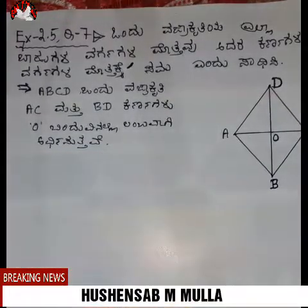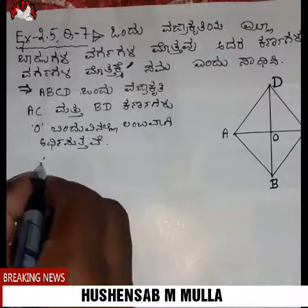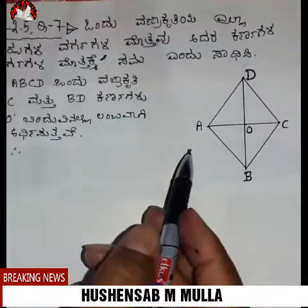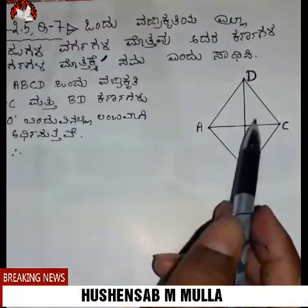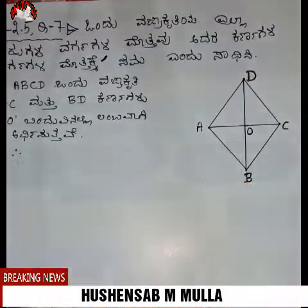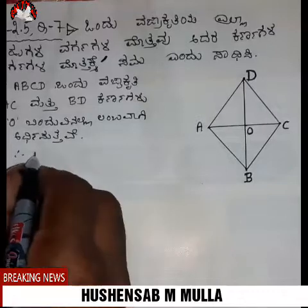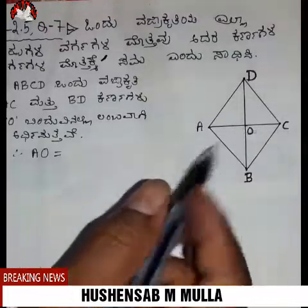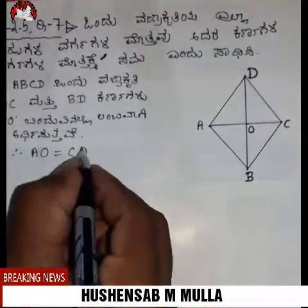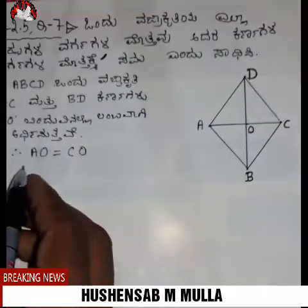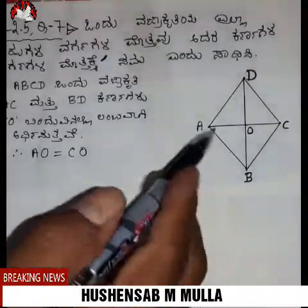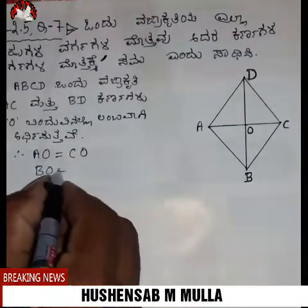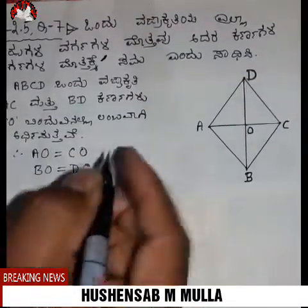How about Ardhishutawandra? E O is equal to O C. B O is equal to O D. E O is equal to C O. B O is equal to D O. Lumbwa Vagin, Ardhishutawandra.